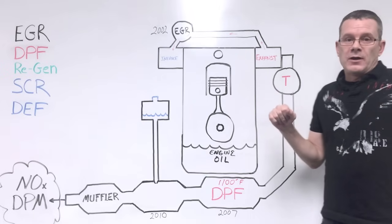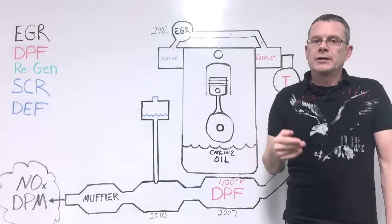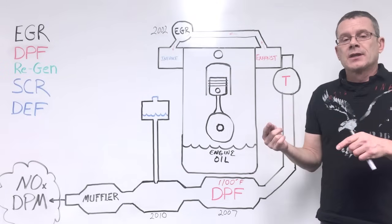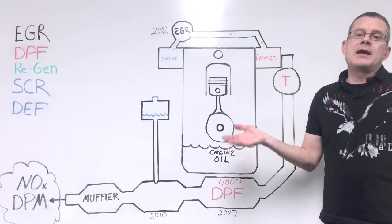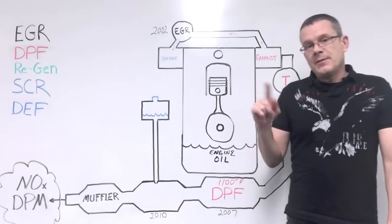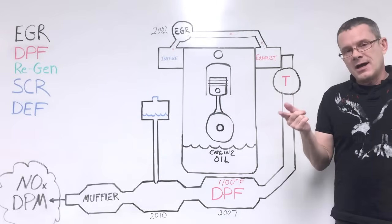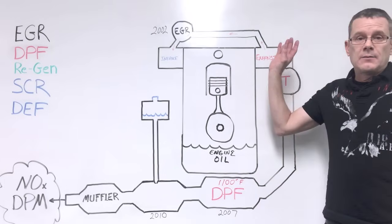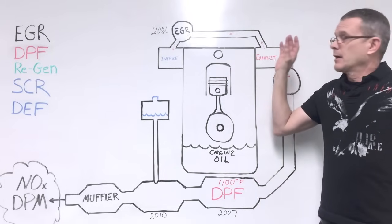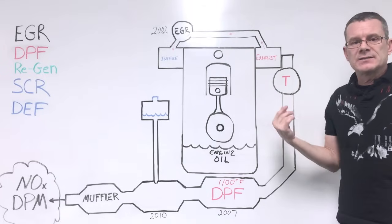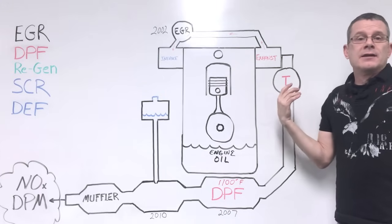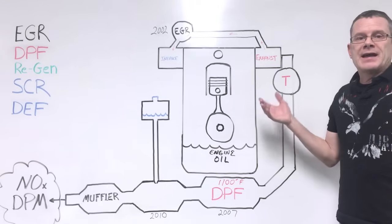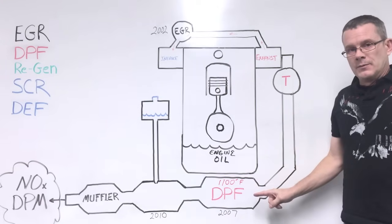The problem with regen mode is it requires high RPMs, and that works good if you're going down the highway. But if you're just driving around town and the regen mode kicks in, through stopping and starting, it may not be able to complete the regen process. That becomes problematic if that happens a lot, because it starts to plug this up and it doesn't get burned out. That provides back pressure to the engine, makes the combustion less efficient, drops power and gas mileage, and that fuel that's being dumped in there doesn't go to moving the car forward anyways.